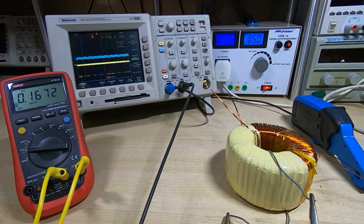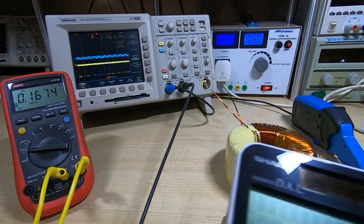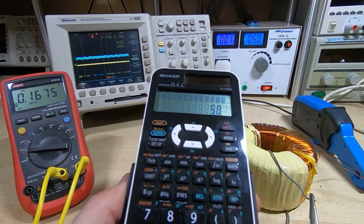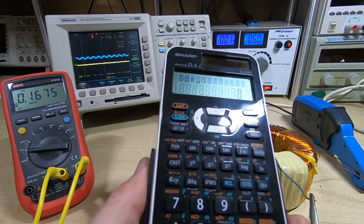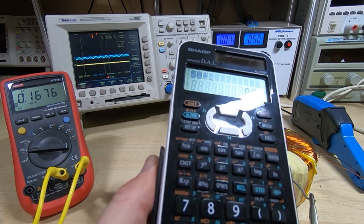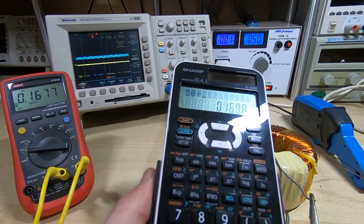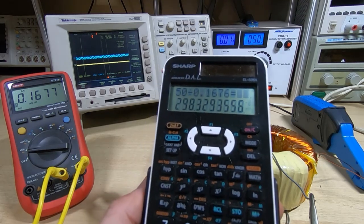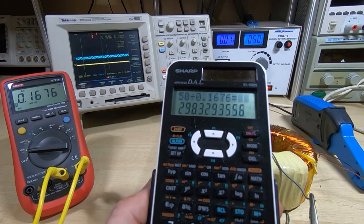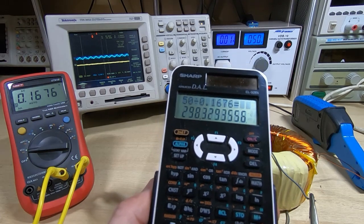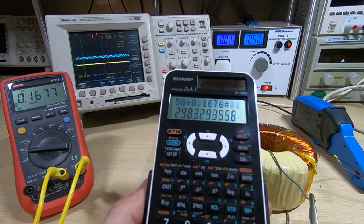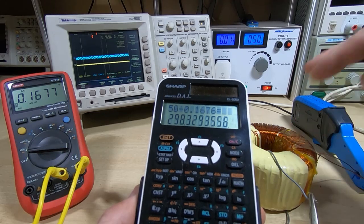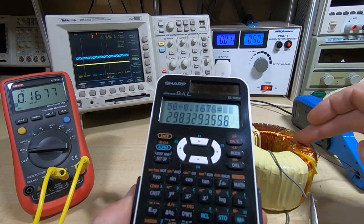If I divide 50, which is the voltage we are feeding in, by 0.167, that equals 298.3 turns. That's our calculated value.